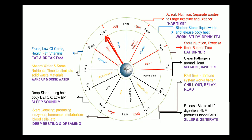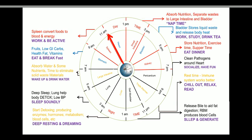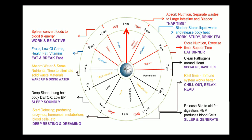Between 9 am to 11 am is the period of the spleen, an important organ involved in the destruction and production of blood cells. The spleen converts food into blood and is involved in the generation of energy. You should be working and active between 9 am to 11 am, as activity influences the production of blood and energy, which keeps you active throughout the day. Between 11 am to 1 pm is the time for the heart, which is most active during this period. Cardiovascular functions are also more active, with blood pressure and heart rate slightly increased. It is the right time to eat lunch and socialize.